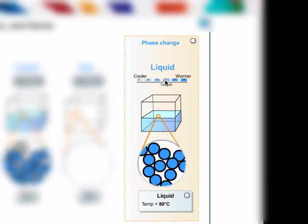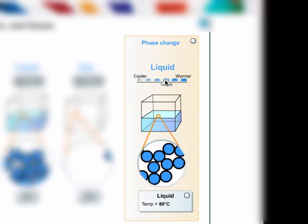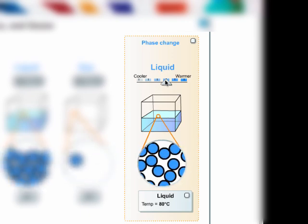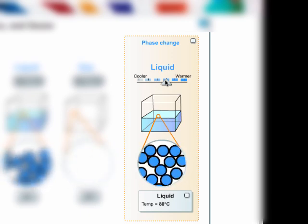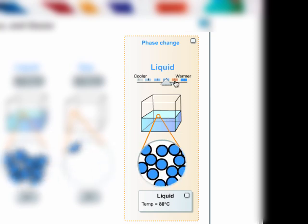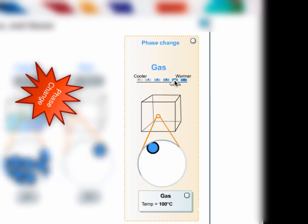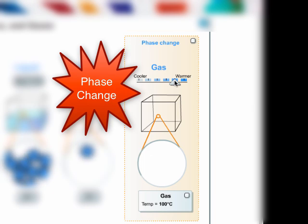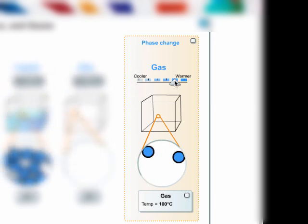As we continue to add heat and we're now at 80 degrees Celsius, you can see that the particle collisions are happening even faster than what they were before and the particles are moving even faster. As we get to a hundred, we have now moved to the gas stage of water.